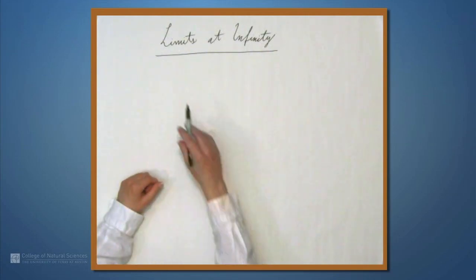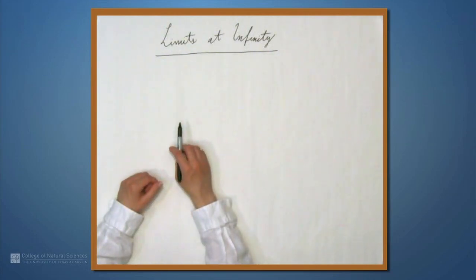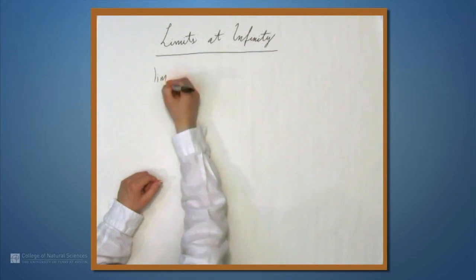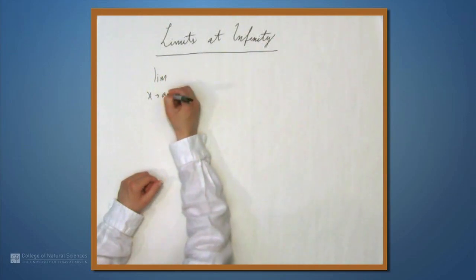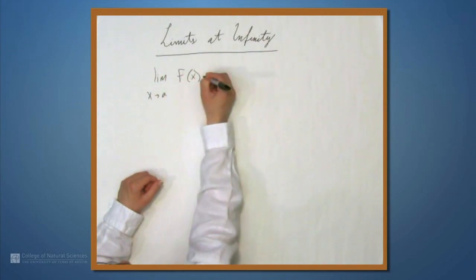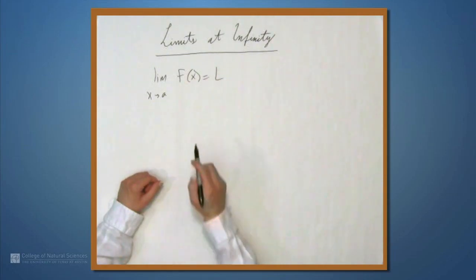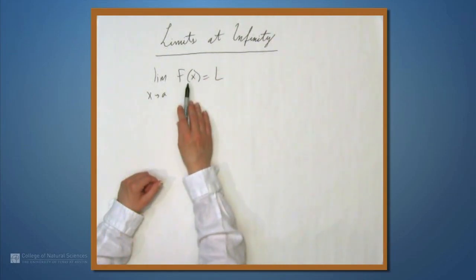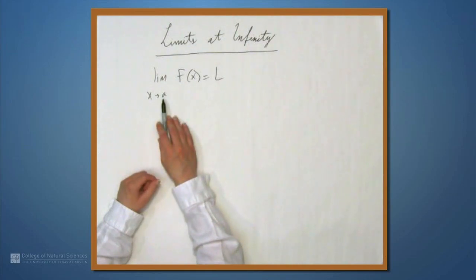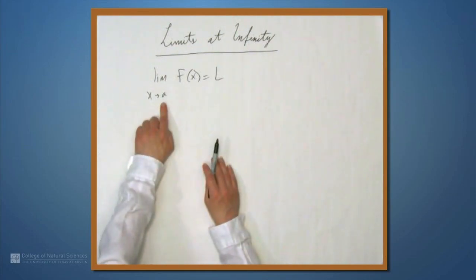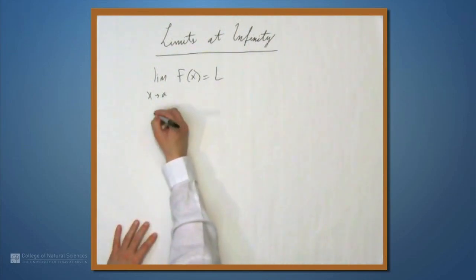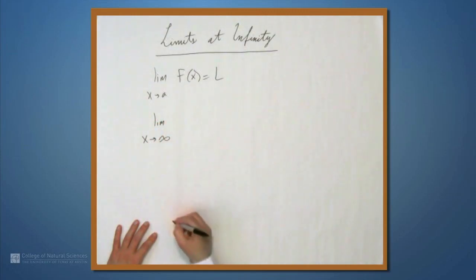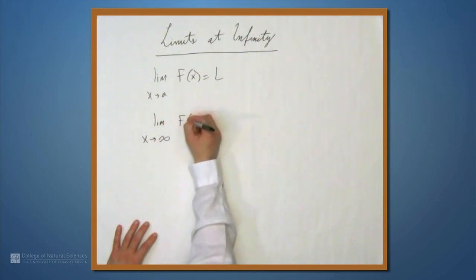We're here at the example table, and in this video we're going to be looking at limits at infinity. Remember, the expression limit as x approaches a of f of x equals L says that the values of f of x approach L as x gets closer and closer to a, where a is a real number. We can also look at limits as x approaches infinity of f of x.